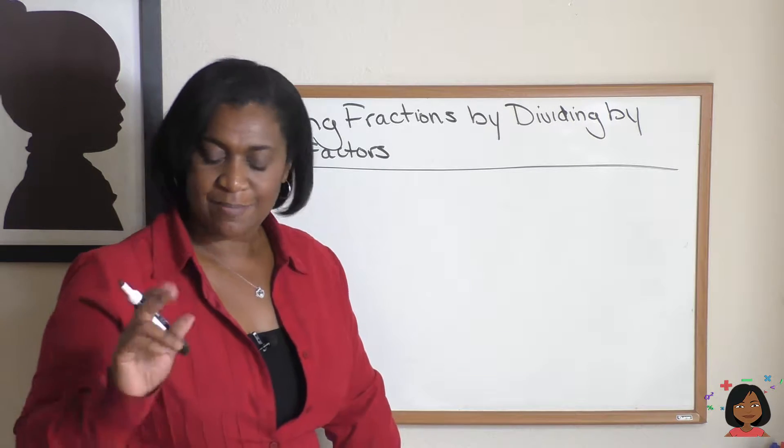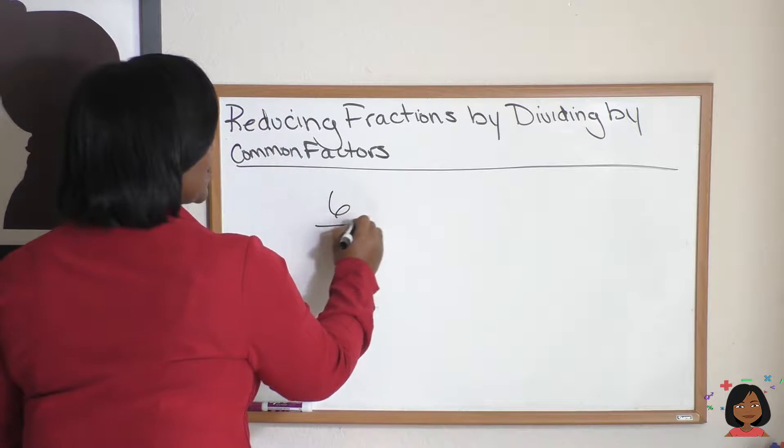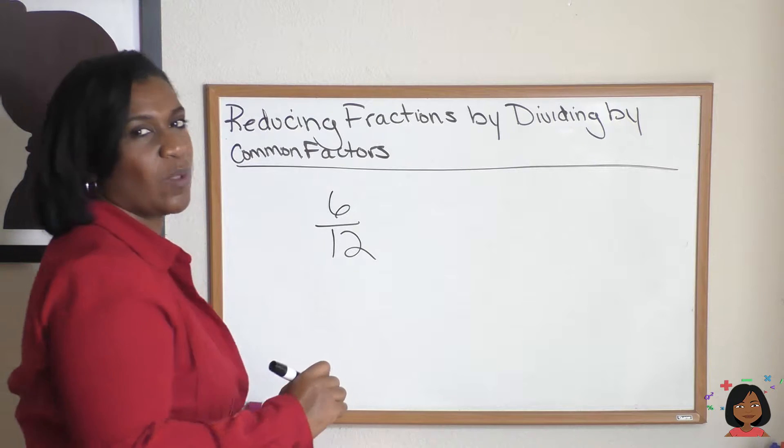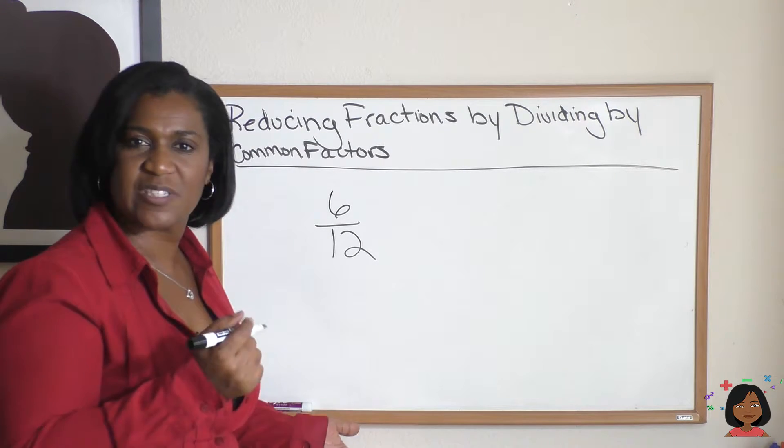What do I mean by that? Let's say we had a fraction like 6/12. We know that this fraction can be simplified. How do we simplify it?